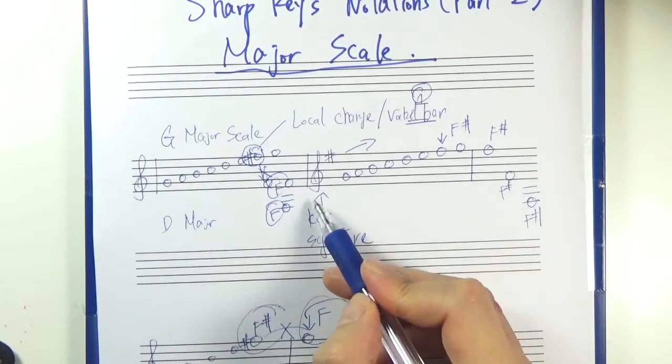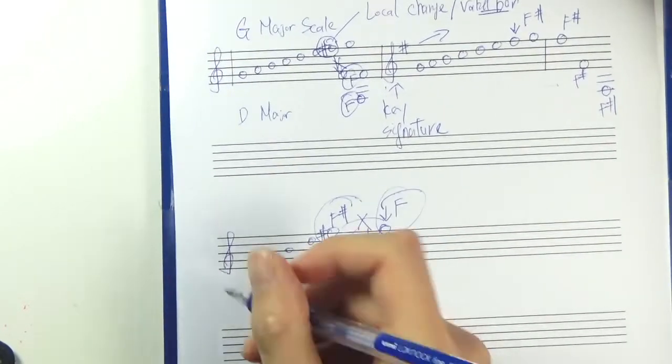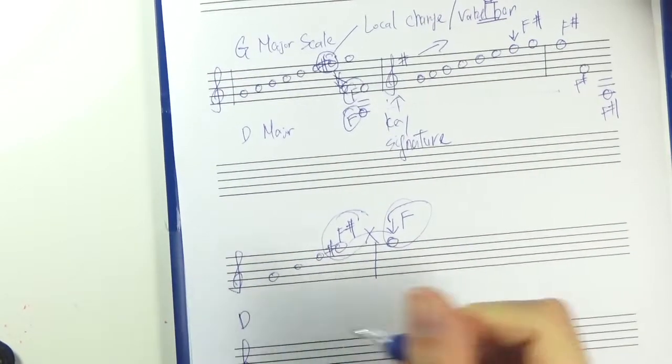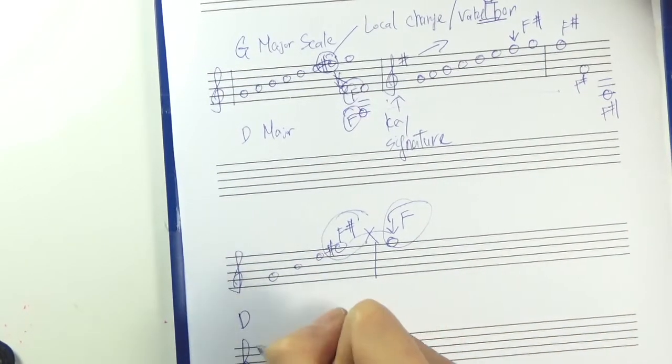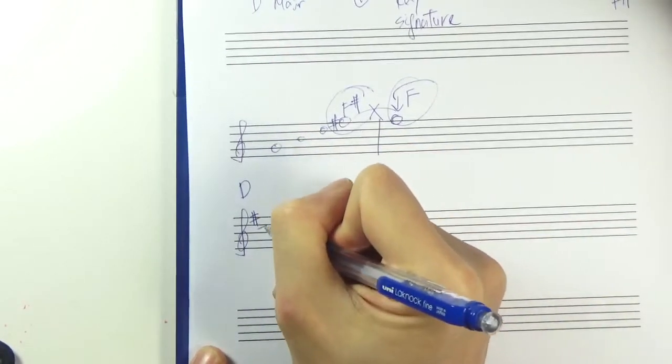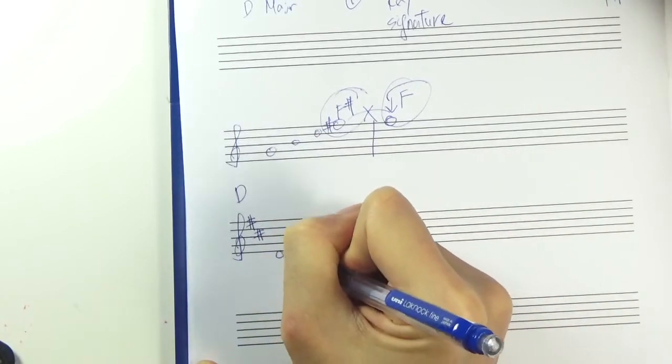Alright. So let's work out a few keys and return this format. Let's go for D major. So D major. Let's put down the key signature here. F sharp. And then C sharp. And then you simply write out all the notes.